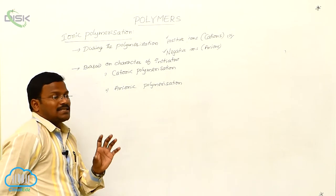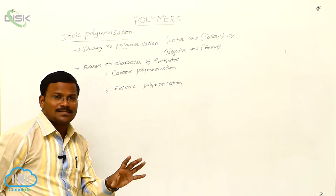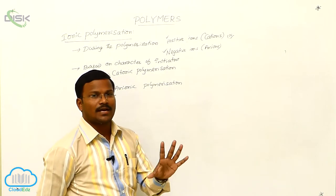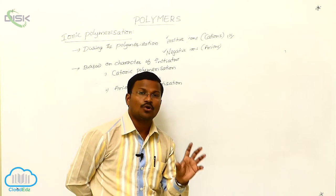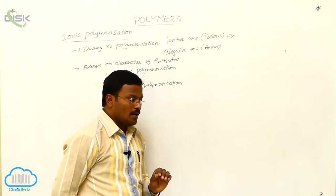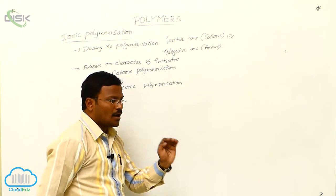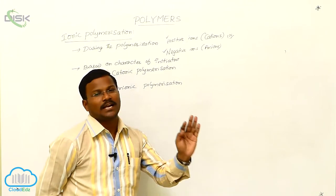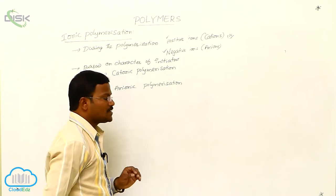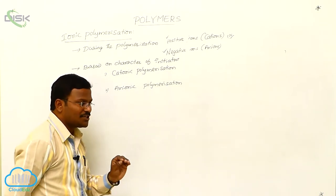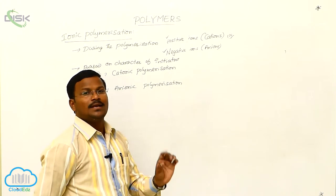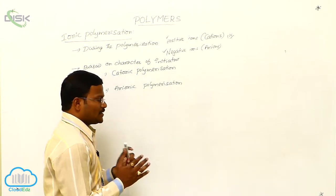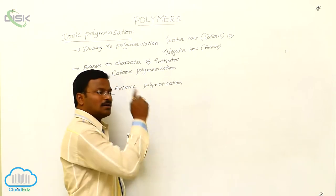We are in the discussion of classification of polymerization reactions based on growth. Addition polymerization, also called chain growth polymerization, and condensation polymerization, also called step growth polymerization. We are currently discussing addition polymerization, also called chain growth polymerization.